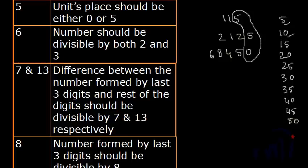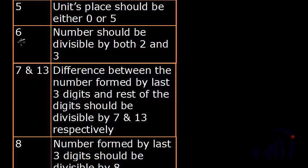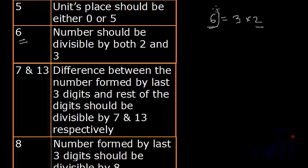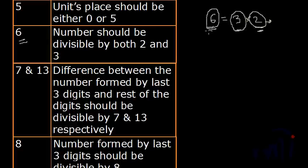Then we have the divisibility rule of 6. Divisibility rule of 6 says the number should be divisible by both 2 and 3. Since 6 can be written as 3 multiplied by 2, if a number has to be divisible by 6, it should be an even number — covered by divisibility by 2 — and since 3 and 2 are factors of 6, the number should also be divisible by 3. This holds good for any composite number.